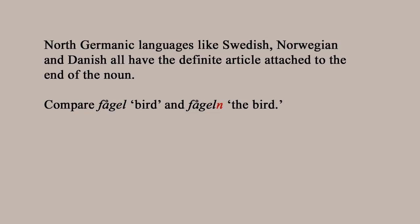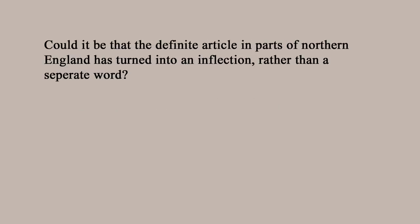If we analyze the northern definite article as a word in its own right, it's a word with zero syllables, and that's not allowed. So it has to be attached to another word. That's not unheard of even in Germanic languages — all standard North Germanic languages, Swedish, Norwegian, and Icelandic, have the definite article attached to the end of the noun it modifies. So 'fågel' means 'bird,' but 'fågeln' means 'the bird,' rather than having a separate definite article word.